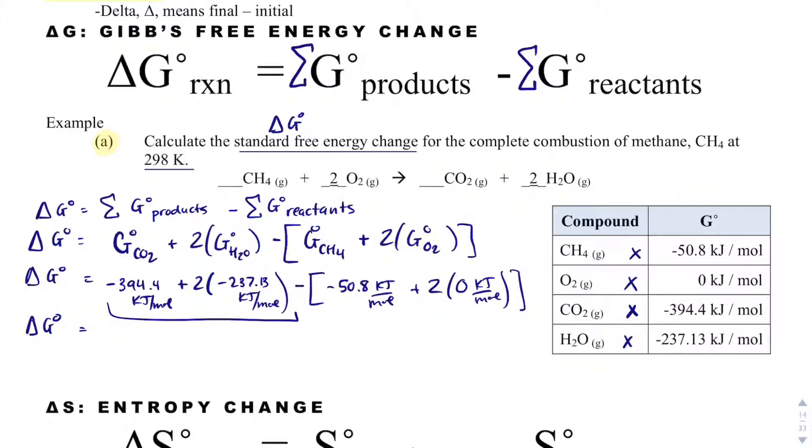Remember, I want to get my delta G for my products and then of my reactants. That way I maximize my points. When I add up my products, I get negative 868.66 kilojoules per mole. I'm going to subtract that from my reactants, which is going to be negative 50.8 kilojoules per mole. So they'll actually end up being added to each other. And I get negative 818 kilojoules per mole. And that's my final answer for delta G.